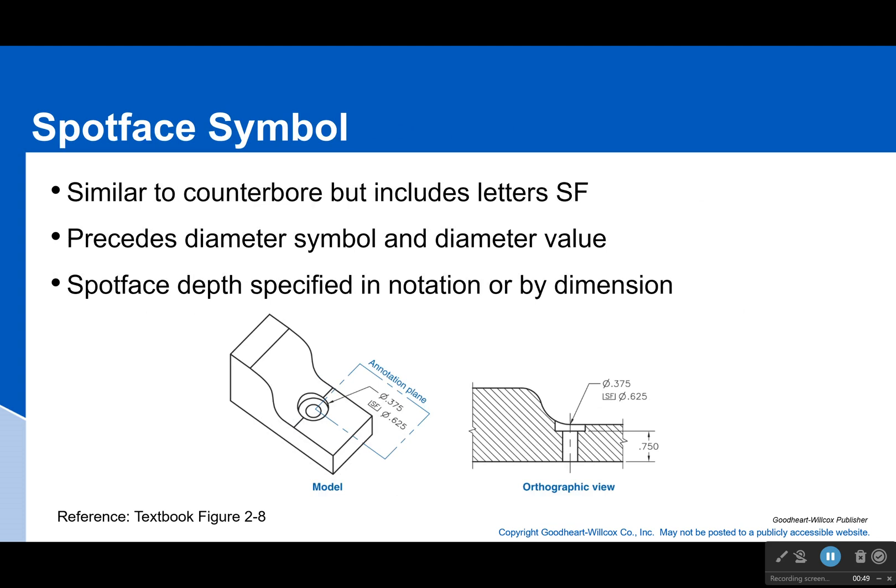Spot face symbol is very similar to the counterbore except it has that SF inside of it. And the depth is not specified right next to the diameter. Instead, that's specified from a dimension to right here - this dimension tells me how deep my spot face needs to be. Now, why is that? Well, that's mostly because spot faces are not always, but most often drilled into a curved surface.